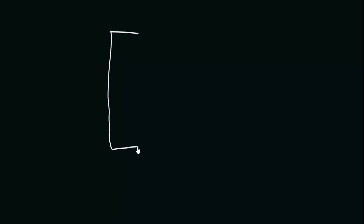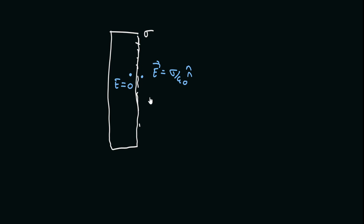Let's say that we have some conductor, and we give it some surface charge density sigma. We know that the electric field at a point just outside the conductor will be equal to sigma divided by epsilon naught n-hat, and inside it will be equal to zero. Therefore, whenever we cross the surface of a conductor, the electric field is discontinuous. And it's not necessary that we have a conductor — it can be any other material. Whenever the electric field crosses a surface charge density, it undergoes a discontinuity.